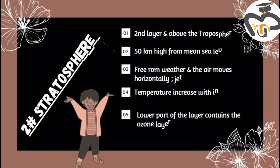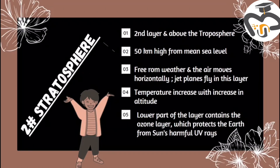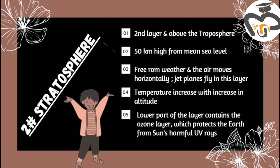Number two: the stratosphere. It is the second layer and it's present above the troposphere. It's 50 km high from mean sea level. It's free from weather and the air moves horizontally. Thus, jet planes fly in this layer. The temperature increases with increase in altitude.